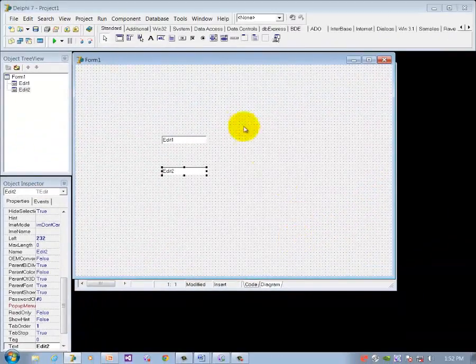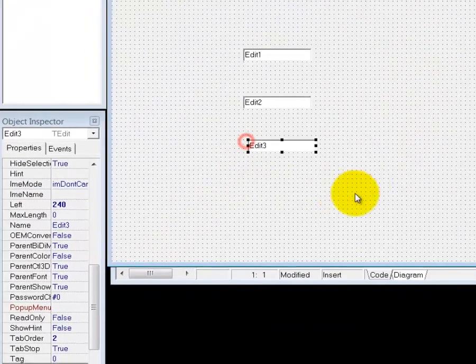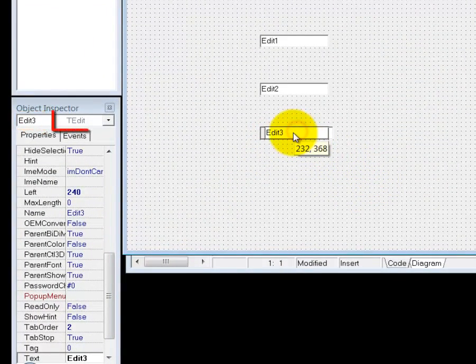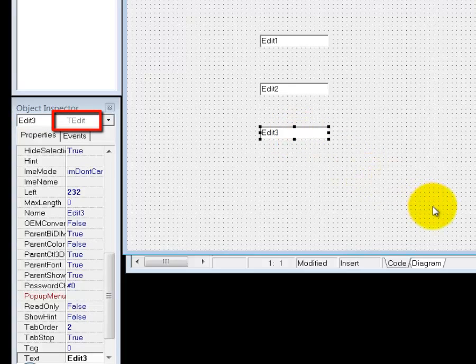I can also add a third instance of the TEdit class on the form. This instance is named edit3. And here I can see that it was instantiated from the same class as edit1 and edit2. All these edits look the same because they were created from the same class called TEdit.